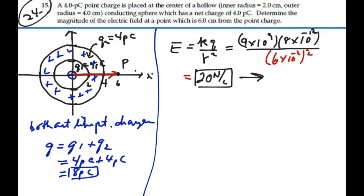Now, the way this configuration would actually work in reality is that if we had this charge in the center, four picocoulombs, and then we had the shell around it with a net charge of four picocoulombs, this four picocoulombs in the center, which is positive, would be offset by four picocoulombs that would be induced on the inner shell of this conductor.